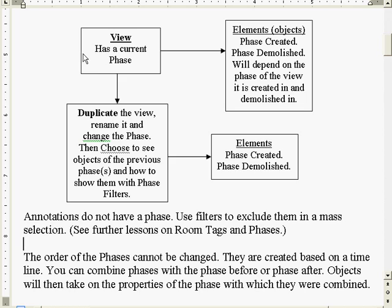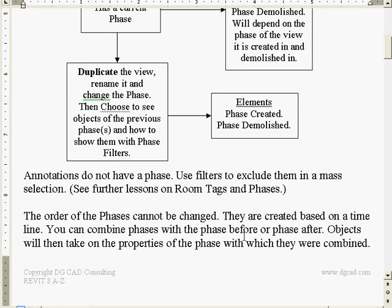Your view has the phase, objects pick it up, you duplicate the view, add more objects that take on the new phase. Maybe you're going to demolish some objects once you get to the next view - those objects will then record phase one created, phase two demolished. That's all we really need to understand right now.